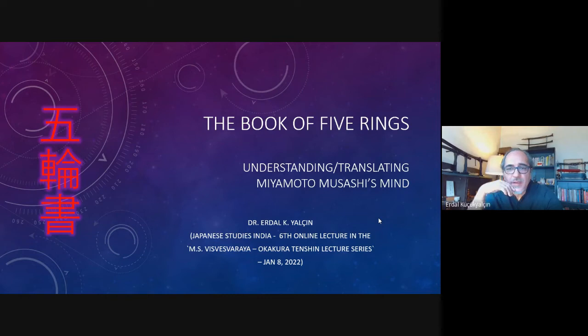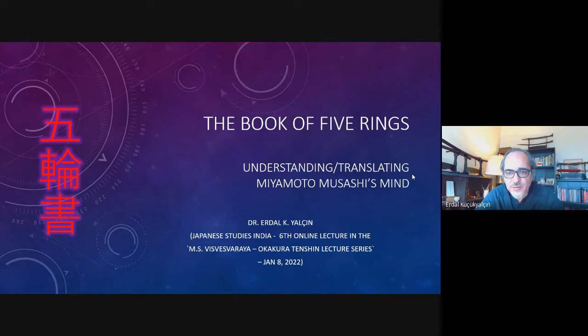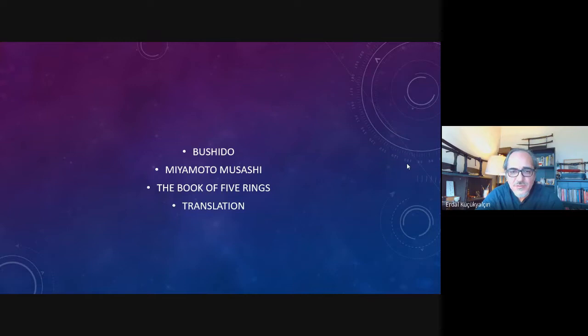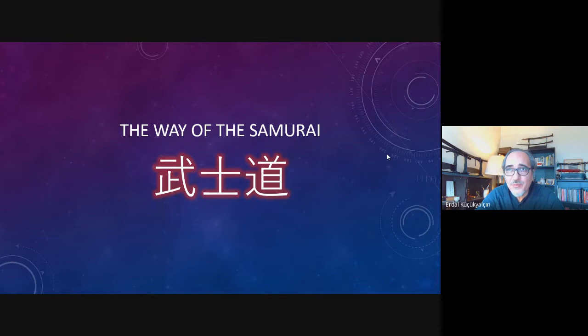The title of this talk is 'Understanding and Translating Miyamoto Musashi's Mind.' I will give a few glimpses of the book and a short introduction of Miyamoto Musashi. I want to start with the main topics of bushido, then go into the Book of Five Rings, and give some glimpses of the translation process.